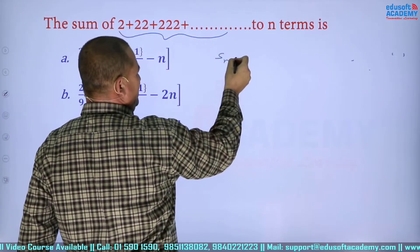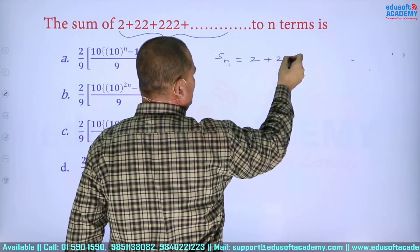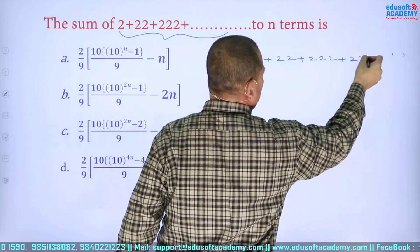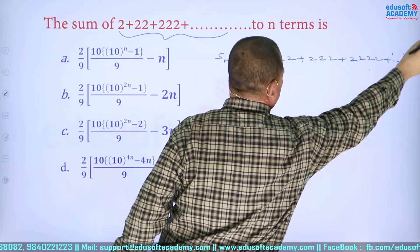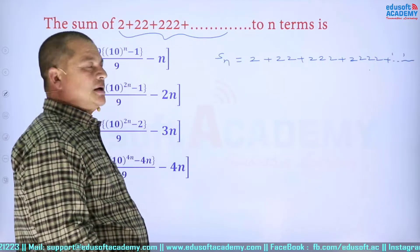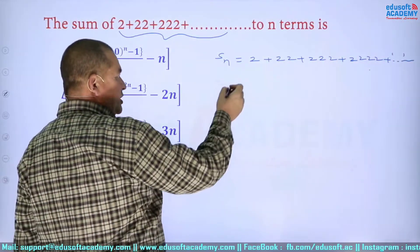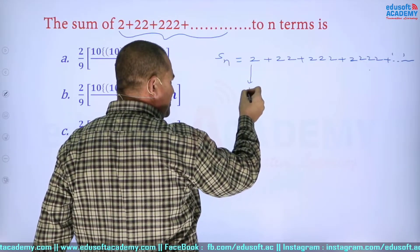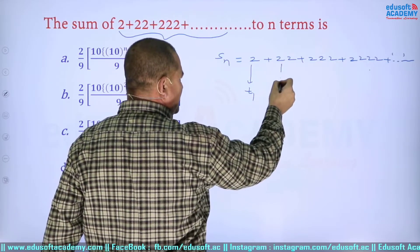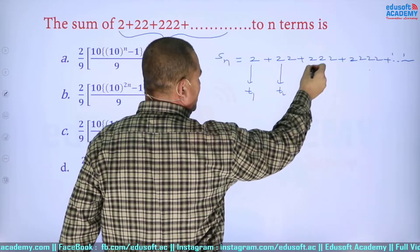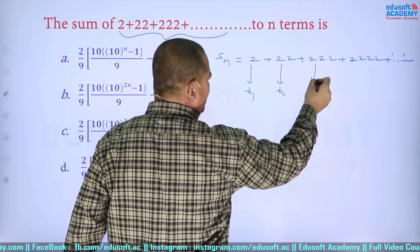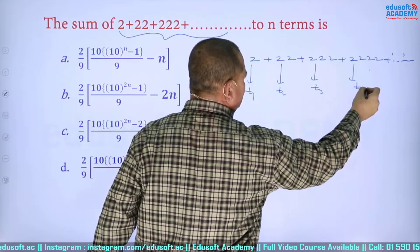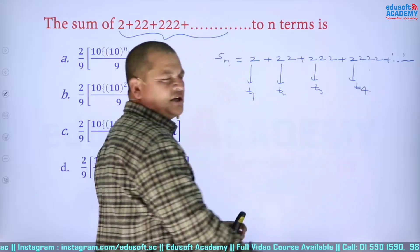So S_n = 2 + 22 + 222 + 2222 + ... to n terms. The first term is 2, the second term is 22, the third term is 222, and the fourth term is 2222.